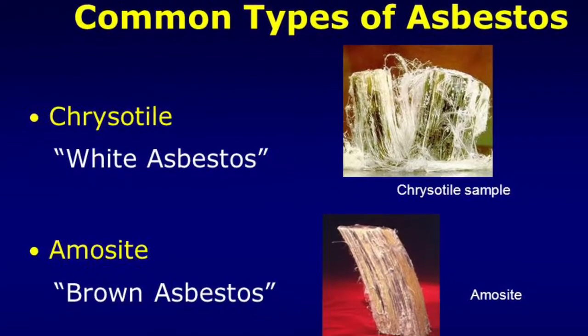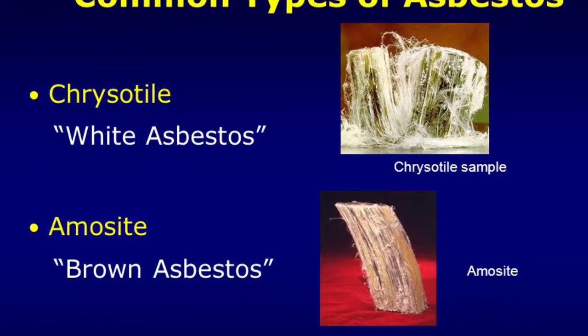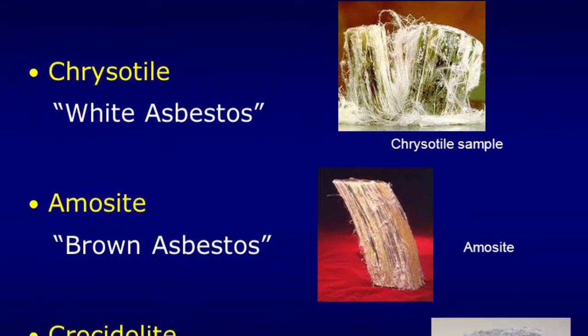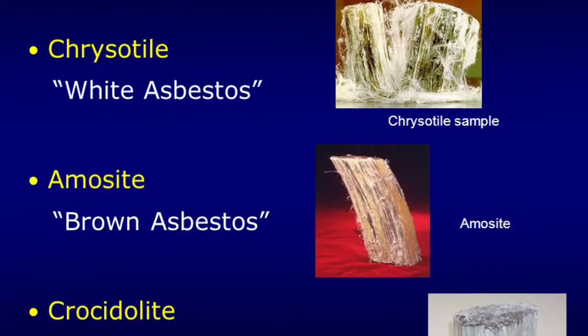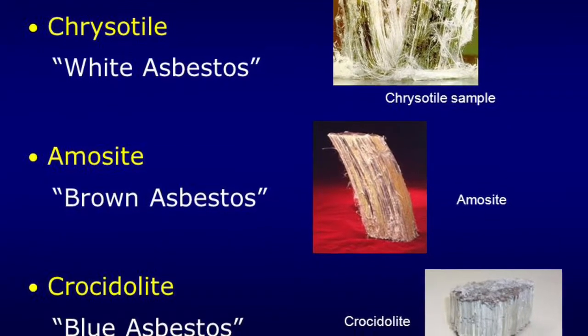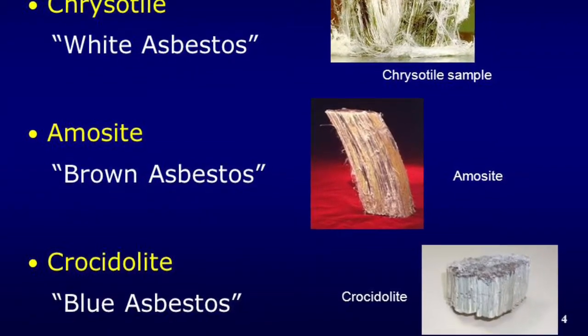The three common types of asbestos are chrysotile, or white asbestos, amosite, or brown asbestos, and crocidolite, or blue asbestos.